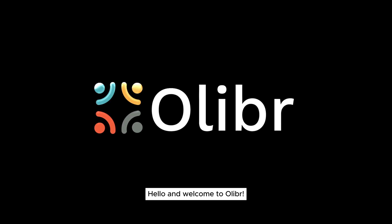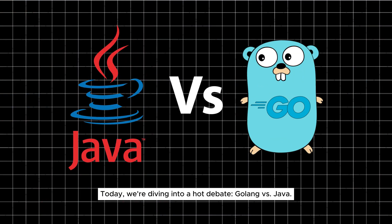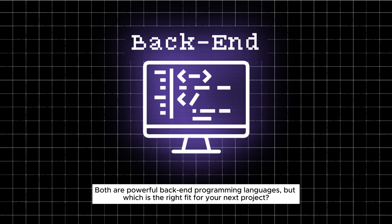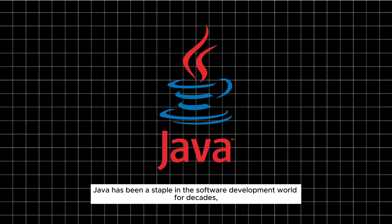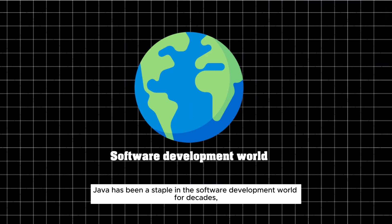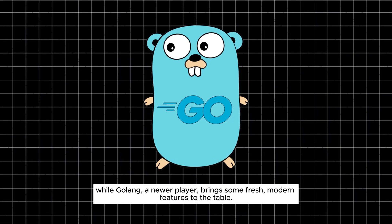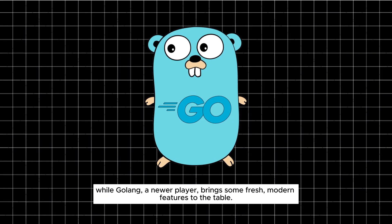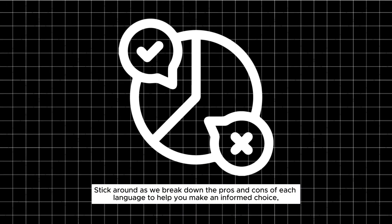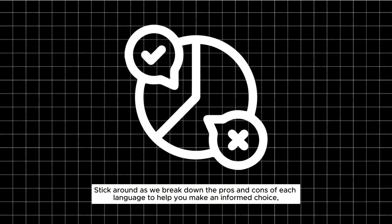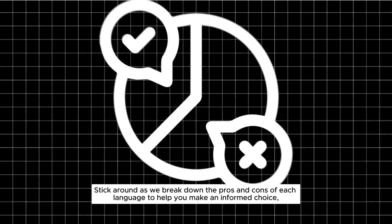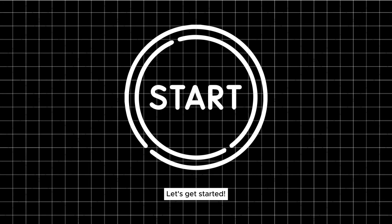Hello and welcome to Oliver. Today we're diving into a hot debate: Go versus Java. Both are powerful back-end programming languages, but which is the right fit for your next project? Java has been a staple in the software development world for decades, while Go, a newer player, brings fresh modern features to the table. Stick around as we break down the pros and cons of each language to help you make an informed choice.